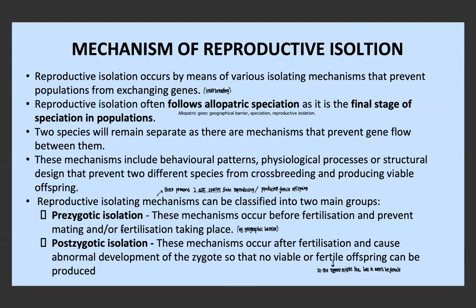Pre-zygotic isolation involves mechanisms that occur before fertilisation — before the copulation process or before the sperm literally fuses with the egg — and they either prevent the mating process or prevent fertilisation. An example is a geographic barrier, where populations are so separate they can't even meet to mate. Post-zygotic isolation means fertilisation could occur between two different species, but the zygote will develop abnormally, and the offspring might not be viable or might not be fertile — it might survive but can't reproduce.